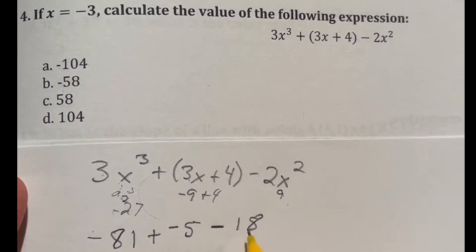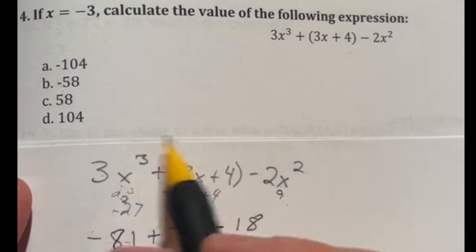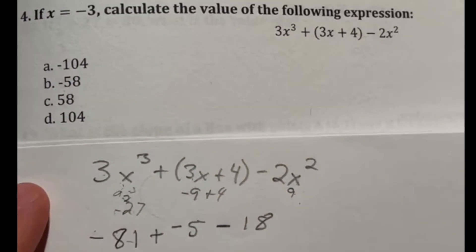So right off the bat, looking at negative, negative, negative, and this one being 81, I know we're going to be deep in the negative. So even without adding these all up, I can tell you our answer is going to end up being a -104.